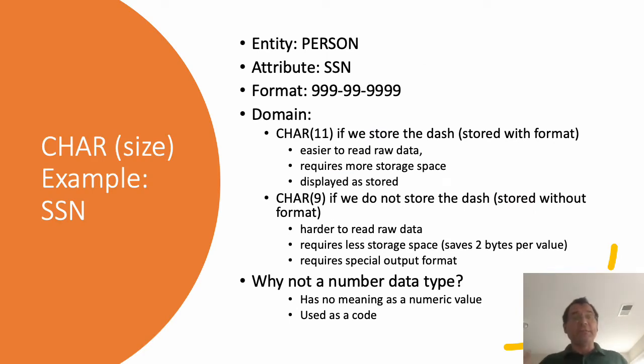For instance, for the entity person we may have the social security number. And one typical format in which this number can be provided is this one with some dashes after the first three and after the next two digits. Now when we decide to store it, it's clear that all social security numbers will have the same format. So it's a good example for the char domain type because we have a fixed number of characters for the social security number. Now we may decide to store it in two ways. One is to keep the format, to keep the dashes in the values.